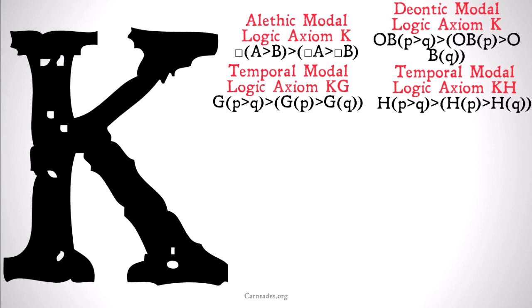Basically we take our strong modal operator — whatever that is, either necessary, obligatory, will always be, or has always been — and we put it over a conditional, and we show that that implies: the strong operator over the first part of the conditional implies the strong operator over the second part of the conditional.